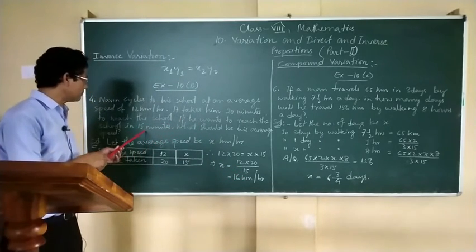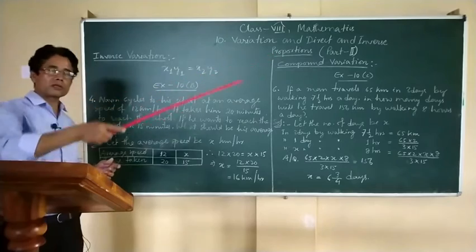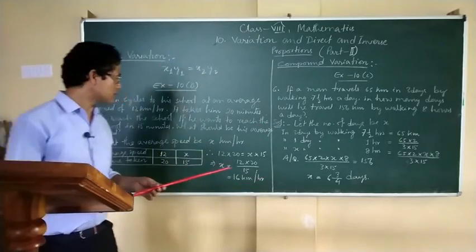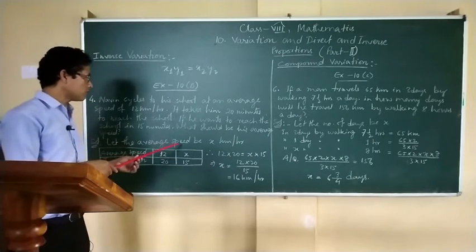With a decrease in the time, the speed should be increased. One quantity is decreasing and the other quantity is increasing. That means this will be a case of inverse variation.